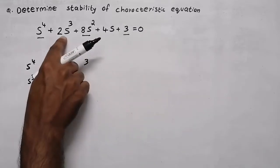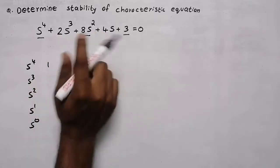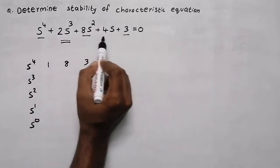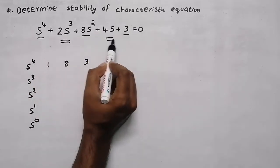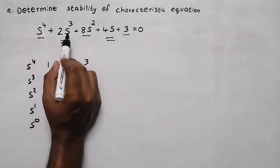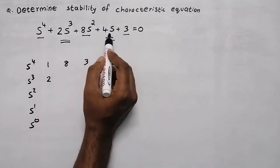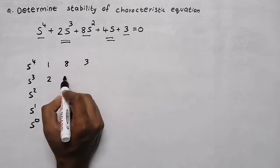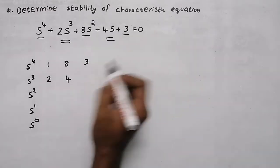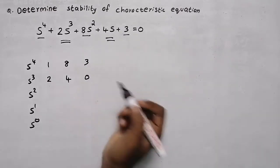Now take the second element and its alternative elements. The coefficient for s cube is 2, the coefficient for s is 4, and there are no more elements, so we write 0.